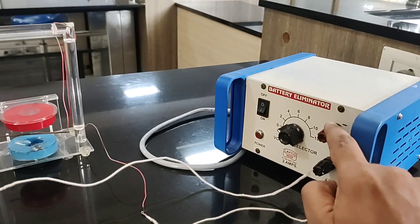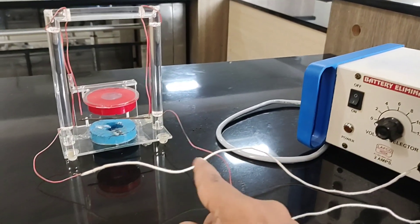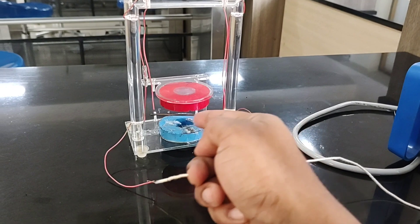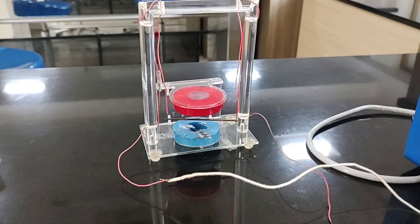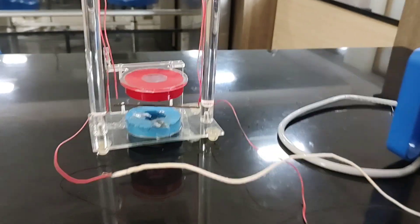Now I reverse the direction of current, so the current is flowing now in the reverse direction from right to left. This is the magnetic field. Now let us turn on the circuit and see what would happen.